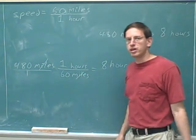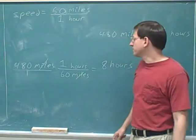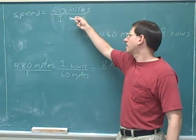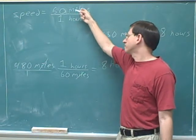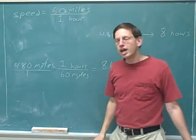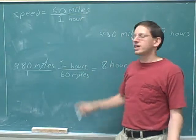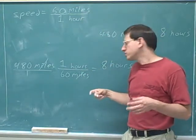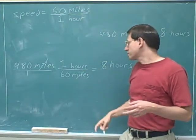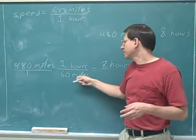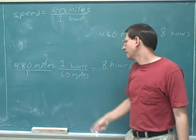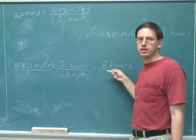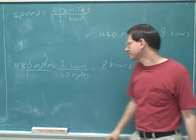This might be tricky for some people, because it might feel weird to reverse the ratio here and put miles on the bottom and hours on the top. How do you know what to put on the top and what to put on the bottom? You work it out just the way we've been doing it. Ask what do I need to put down here to cancel these units, and what do I need to put up here to get the units that I'm trying to get ultimately.